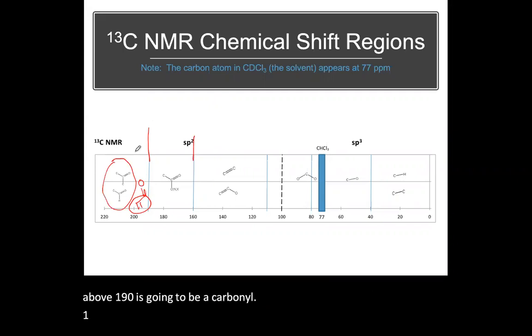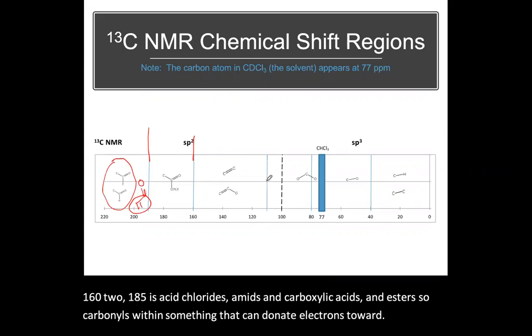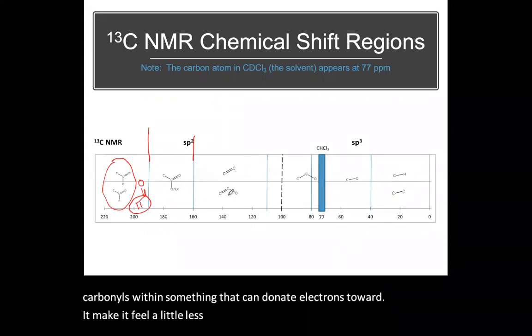160 to 185 is acid chlorides, amides, and carboxylic acids and esters. So carbonyls within something that can donate electrons toward it and make it feel a little less positive, electropositive.